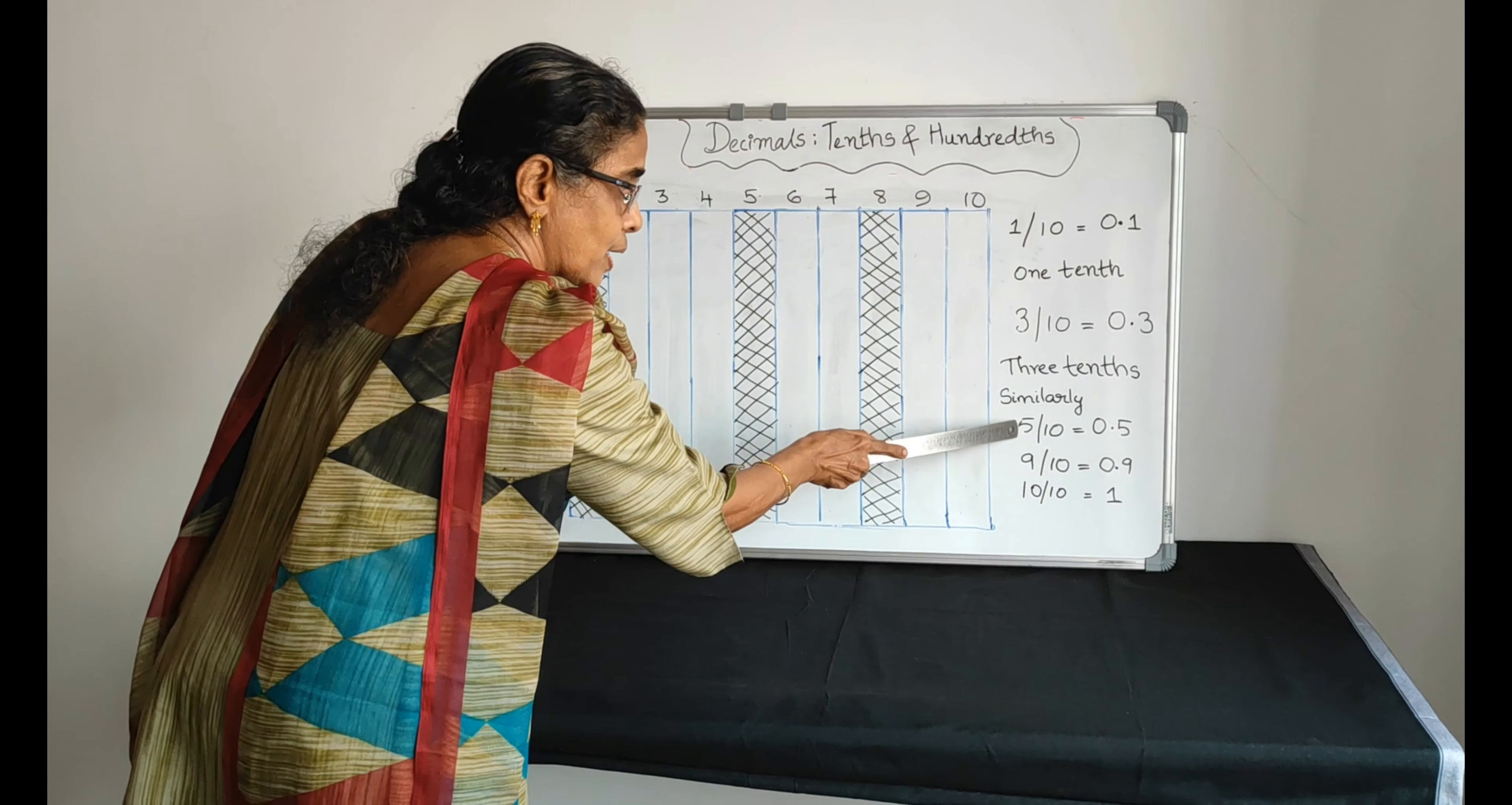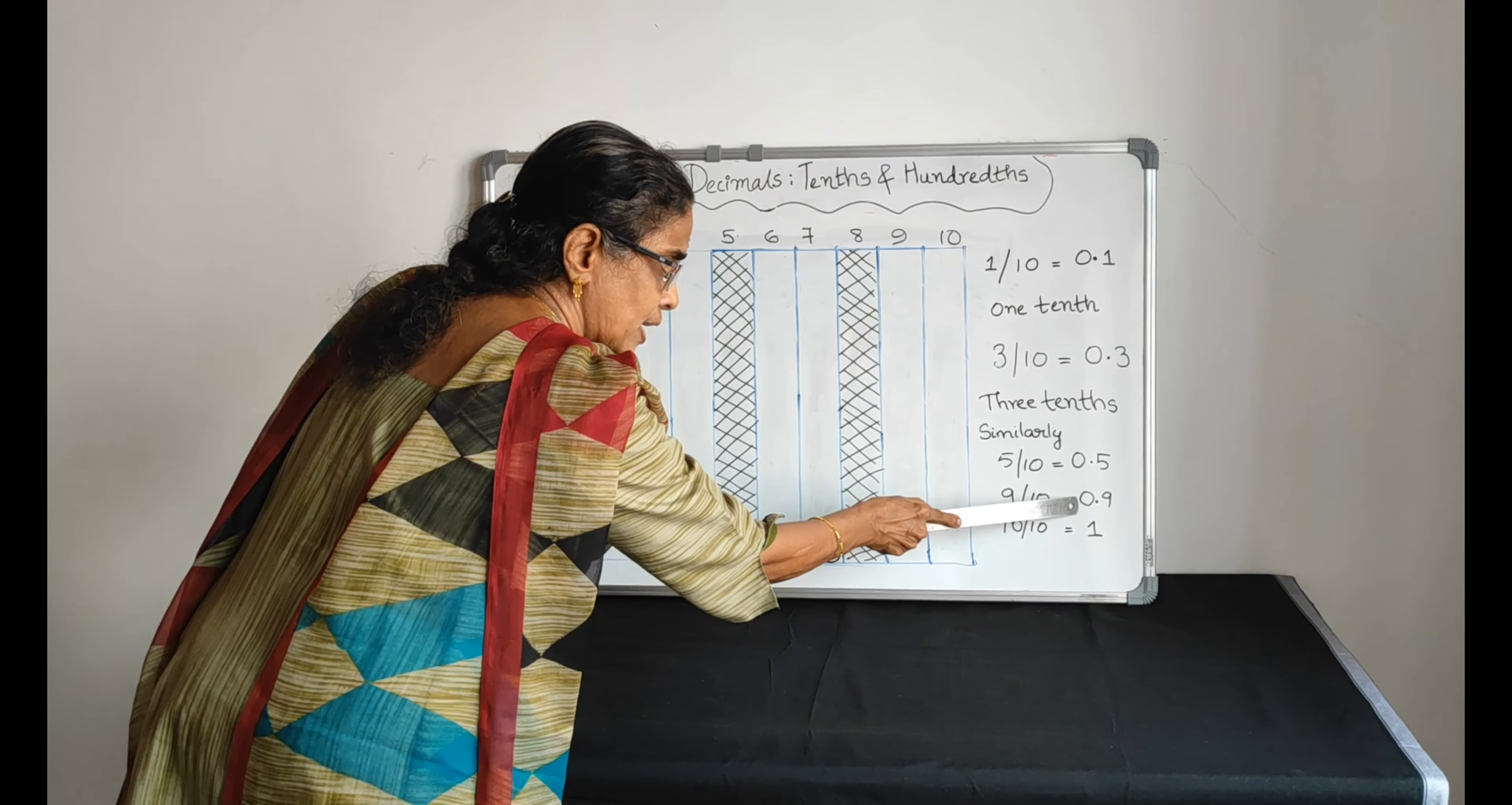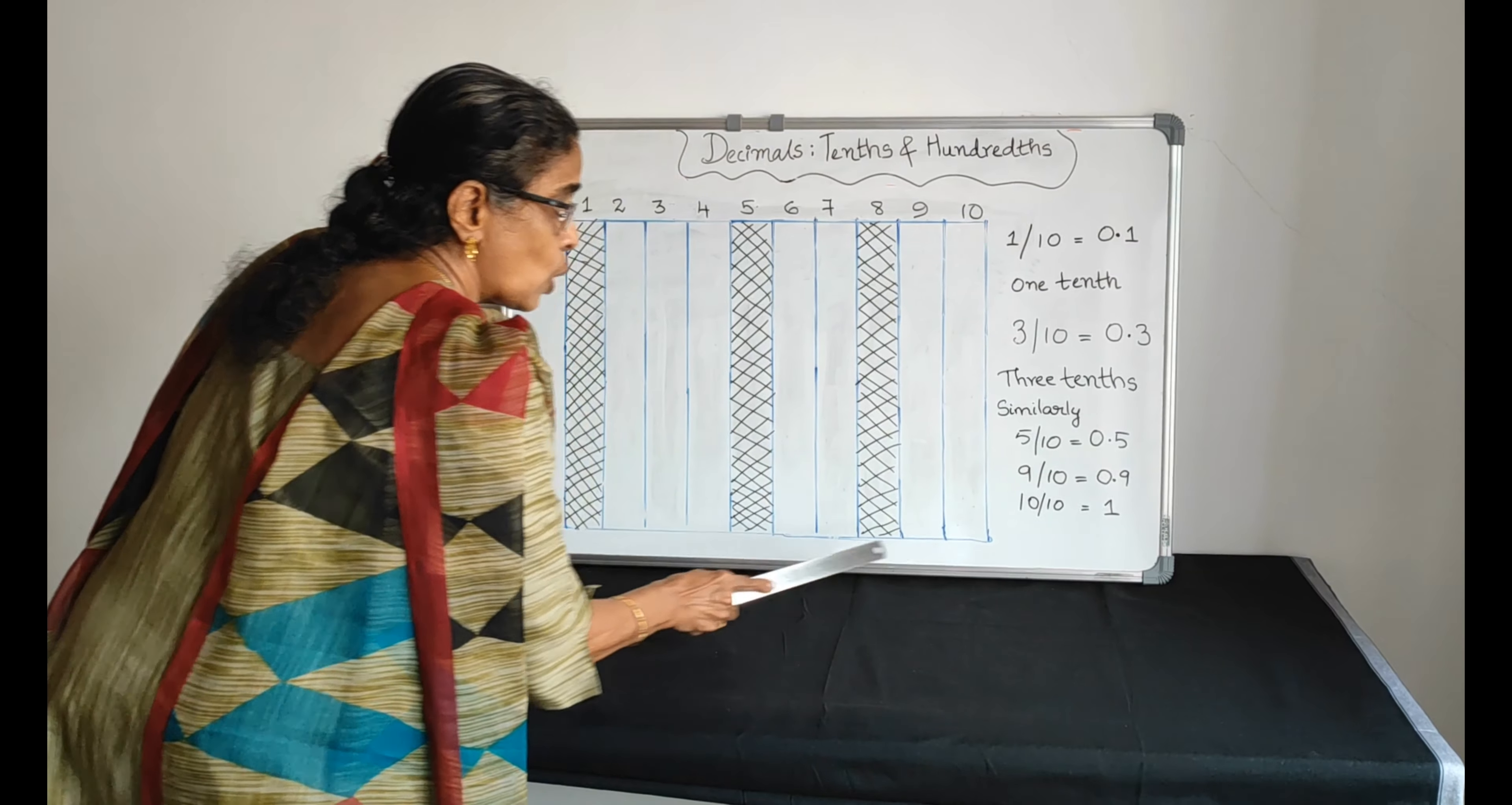Similarly, 5/10 means 0.5, five tenths. 9/10 means 0.9, nine tenths. If it is 10/10, full portion is shaded. 10/10 means one whole.